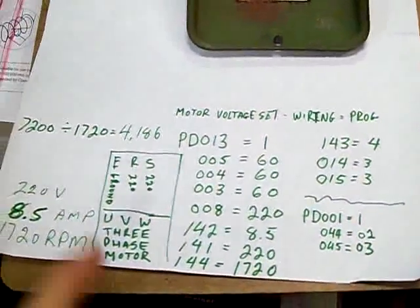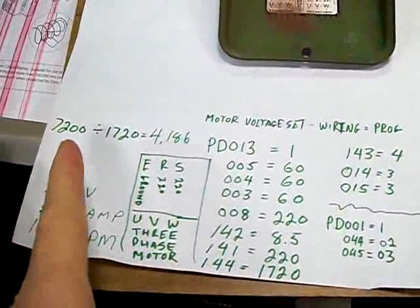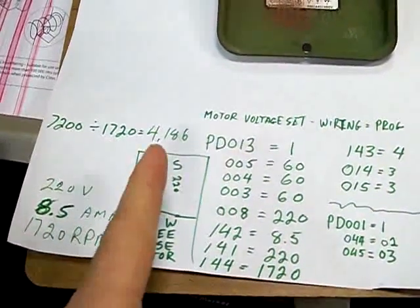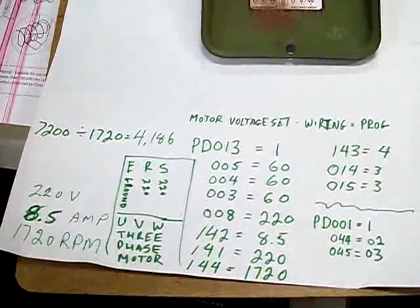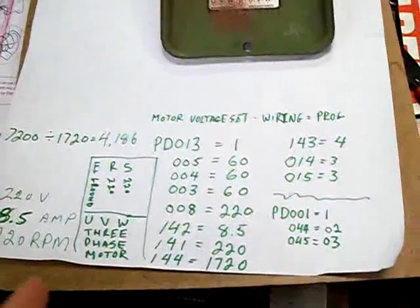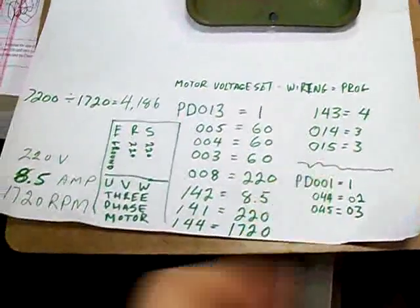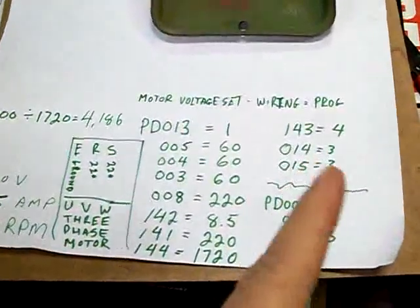If you don't know what that is, apparently I found online you take 7200, divide that by your RPM, and you get that value. It was already set up on default at 4, and I spoke to a friend. He said that's normal 4 poles for this type of motor. I don't know, I'm not an electrician.